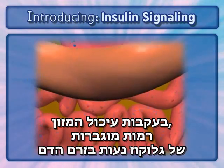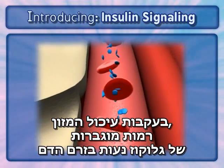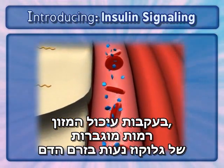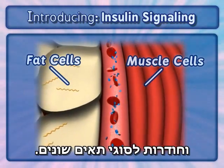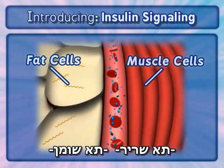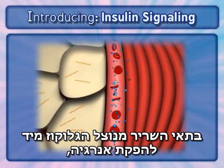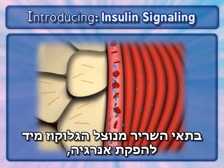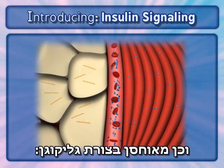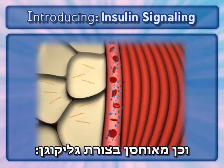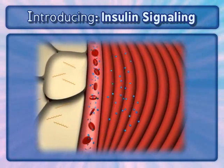Following the digestion of food, higher levels of glucose circulate through the bloodstream where it enters different cell types. In muscle cells, glucose is readily used to produce energy and is also stored as glycogen, a secondary short-term energy source.